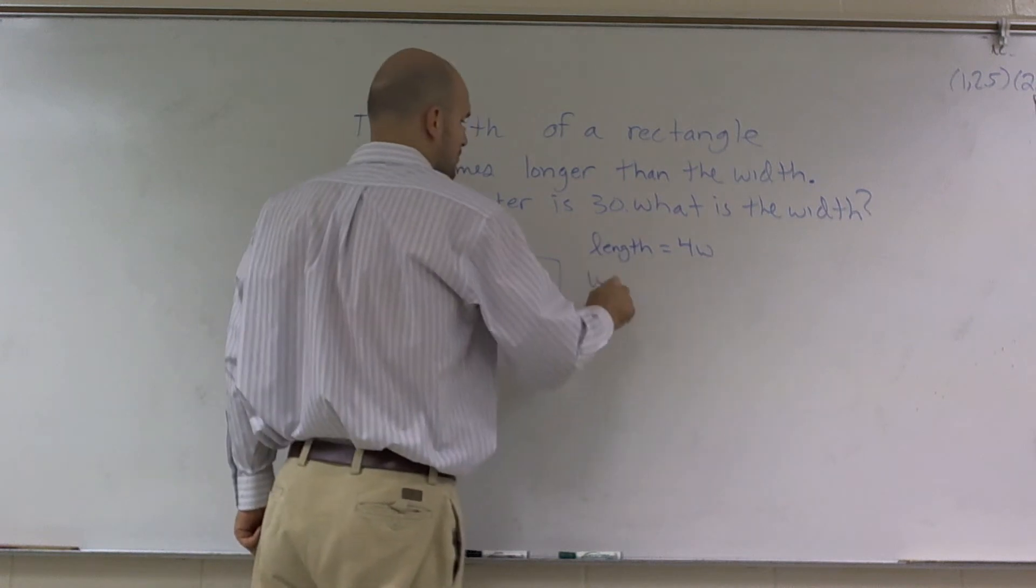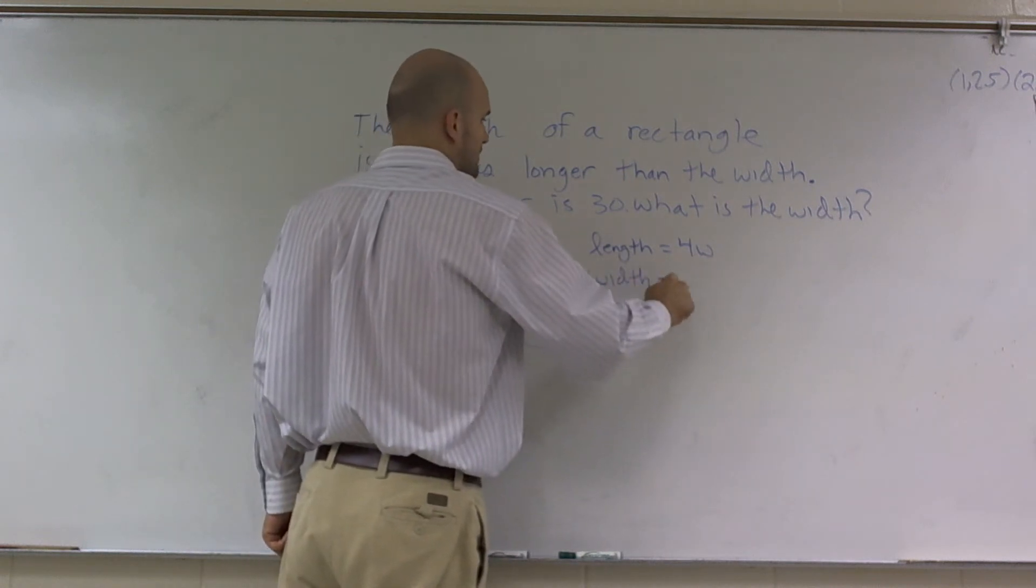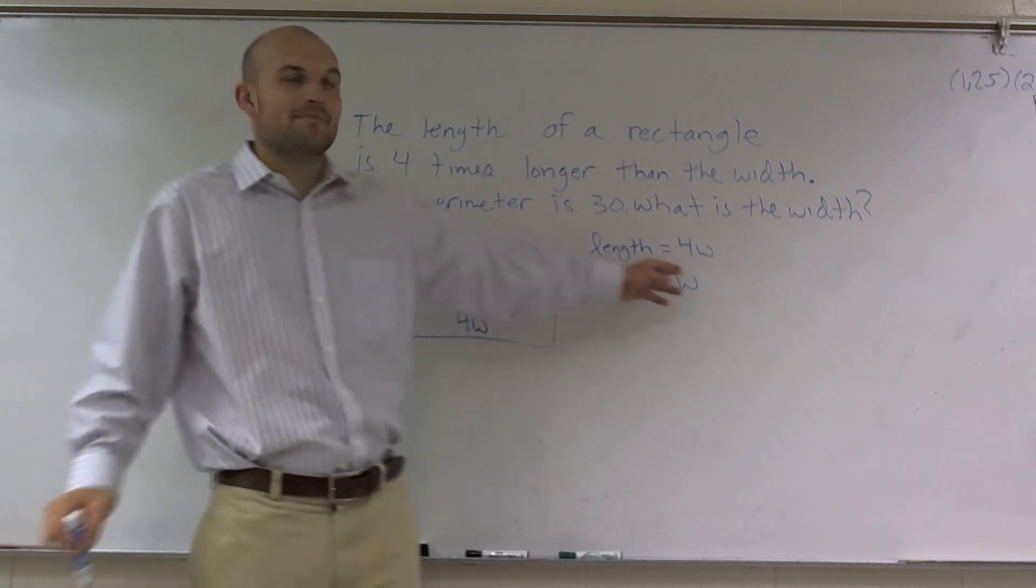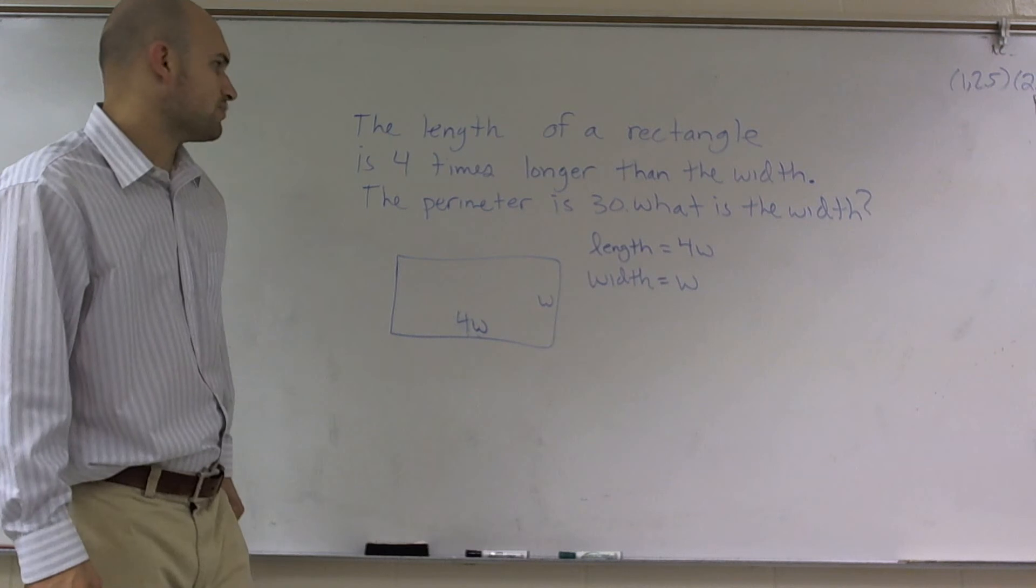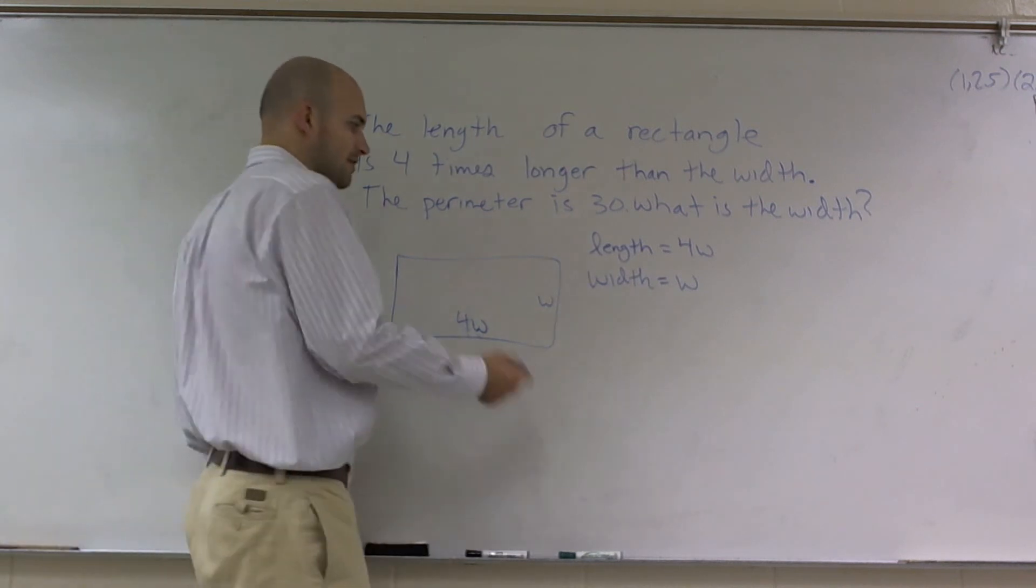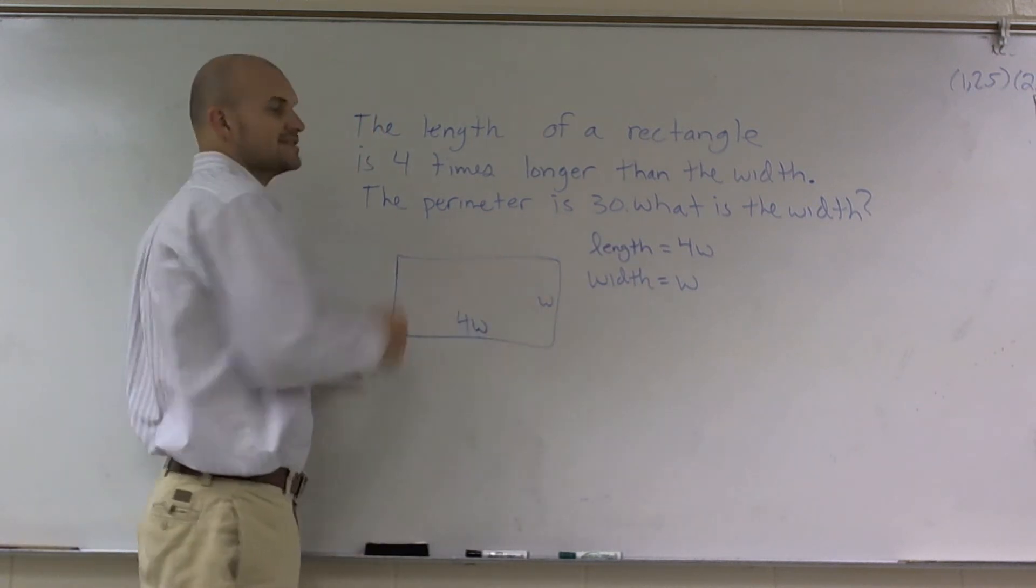Where w, or the width, is equal to w. So now I've defined my variable. I know what my variable is. So it says the perimeter is 30. So therefore, remember, perimeter is the distance around a figure.